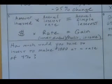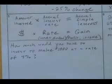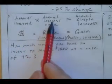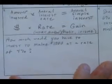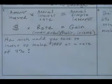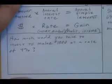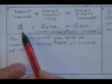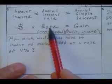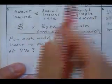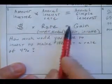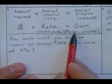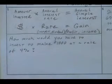Now we're talking about investing. The formula is: the amount you invest times the annual interest rate equals your annual simple interest — meaning the actual dollar amount, not the percent. For example, if you invest $100 and earn 7%, your simple interest is $7. So money times rate equals your gain, which is also your profit or income.